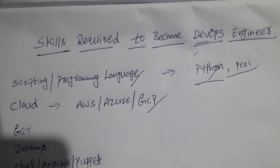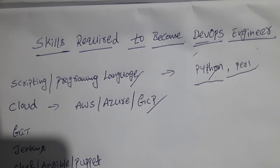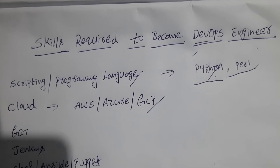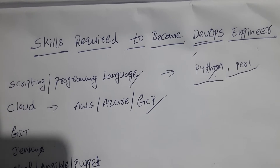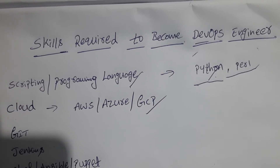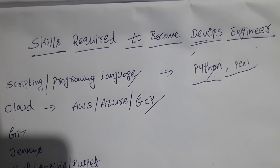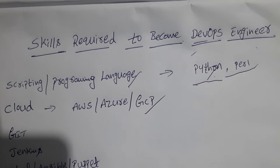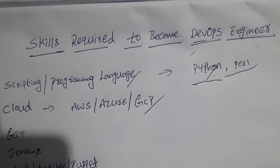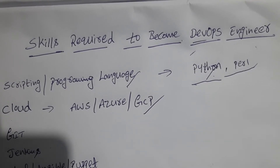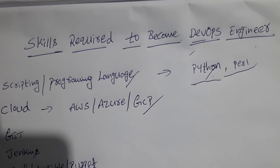First let me define what is DevOps. DevOps is a term for a group of concepts — it's not limited to one tool, it is not a technology, it's not a programming language, it's not a database tool. So it is a term for a group of concepts — it is the combination of operations and development engineers participating together in the entire service lifecycle.